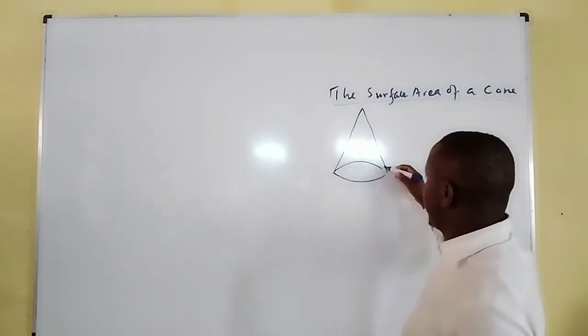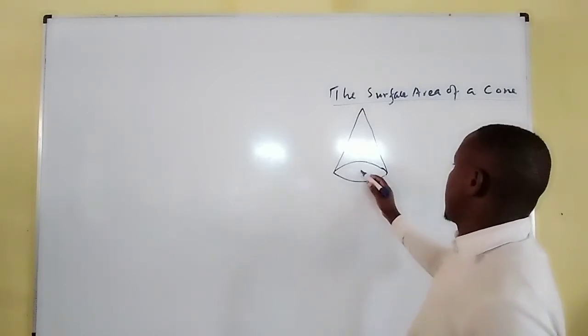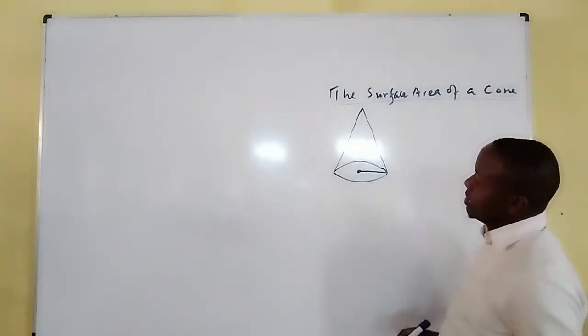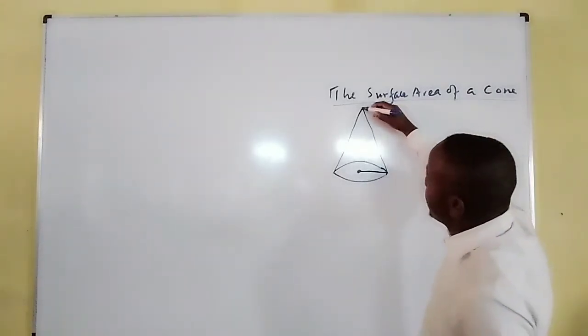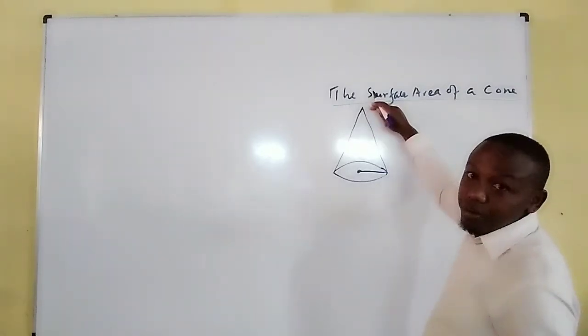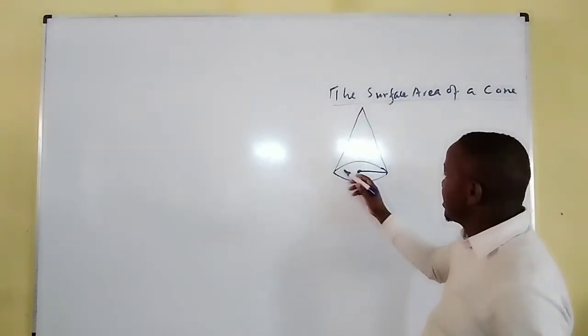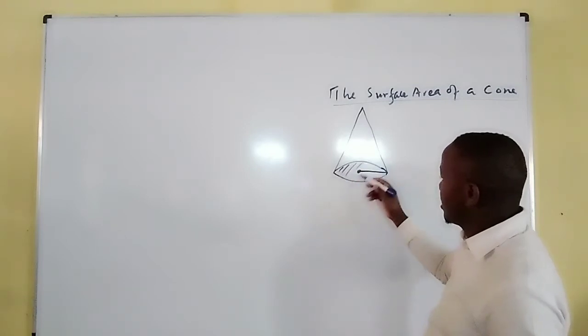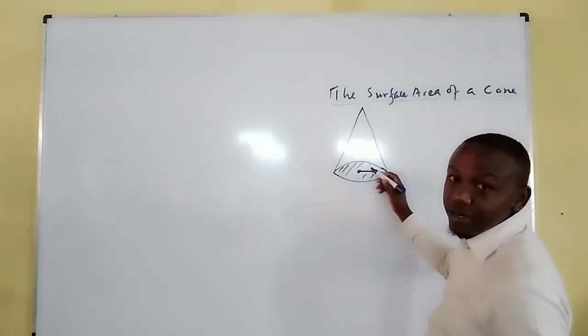When you consider this shape, you find that it is a pyramid because there is a common vertex at the top, and the base is circular with a given radius.